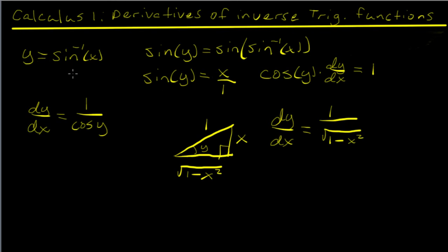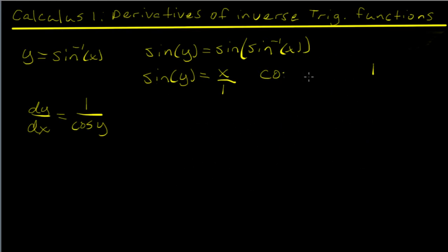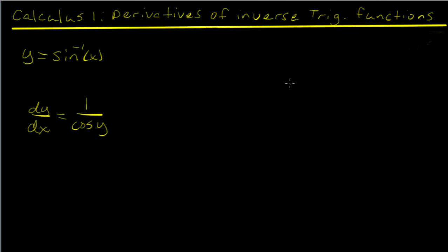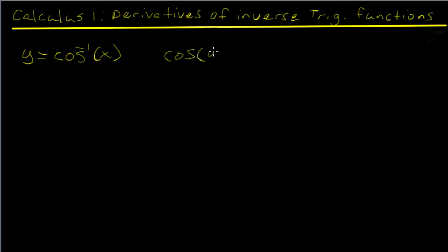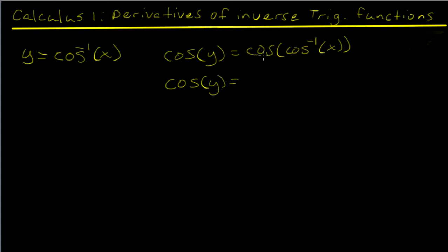That's the derivative of sine inverse. Now we move on to the cosine inverse. For y equals the cosine inverse of x, we use the same trick — we take the cosine of both sides. On the left we get cosine of y, and on the right the cosine of the cosine inverse of x simplifies to x.